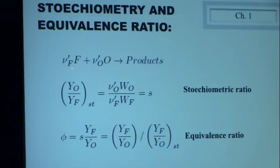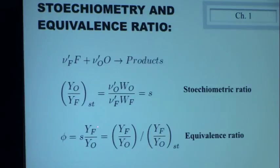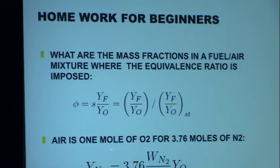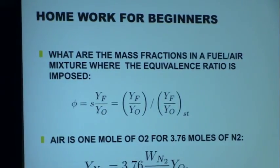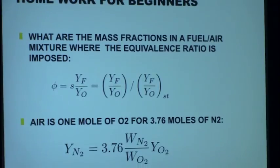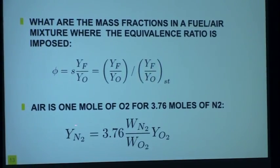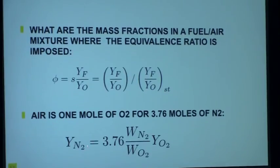The stoichiometric ratio S is defined as nu_O times W_O divided by nu_F times W_F, and the equivalence ratio is S times Y_F over Y_O. You can define it only in the fresh gases. For air, one mole of O2 means 3.76 moles of N2 in normal air. The nitrogen mass fraction is linked to the oxygen mass fraction by this ratio — in mass you multiply by the ratio 28 over 32, so 0.028 in international SI units. A common student mistake is to write 28 instead of 0.028.